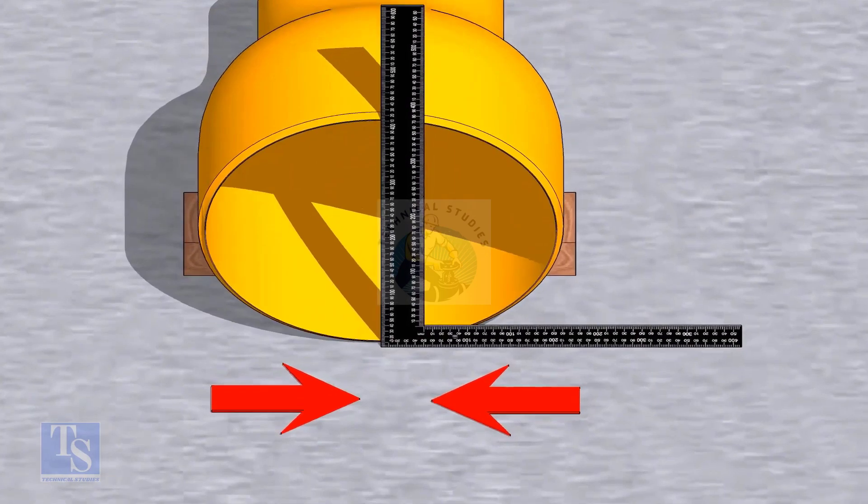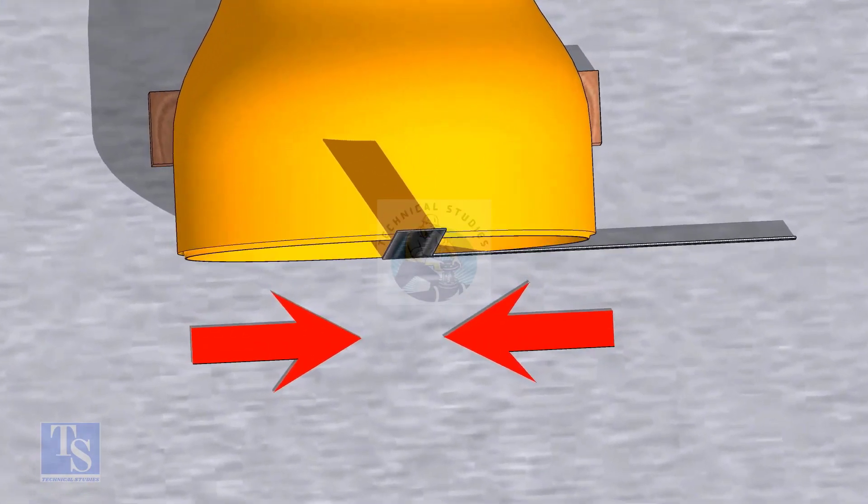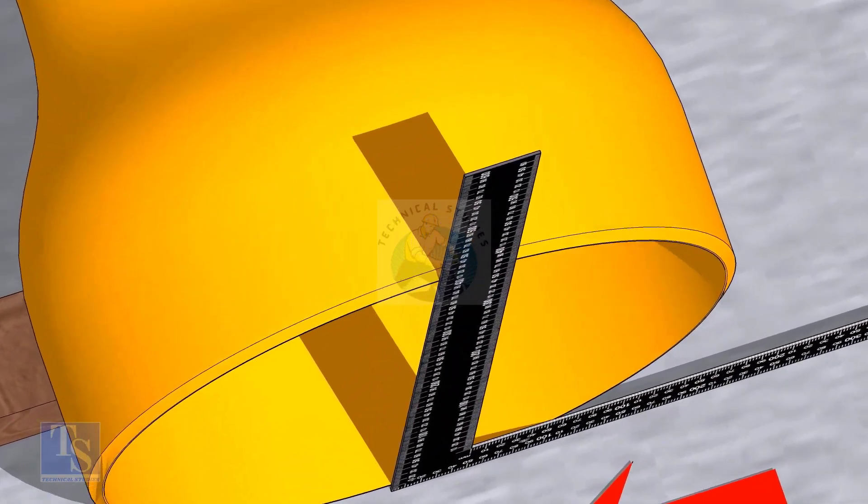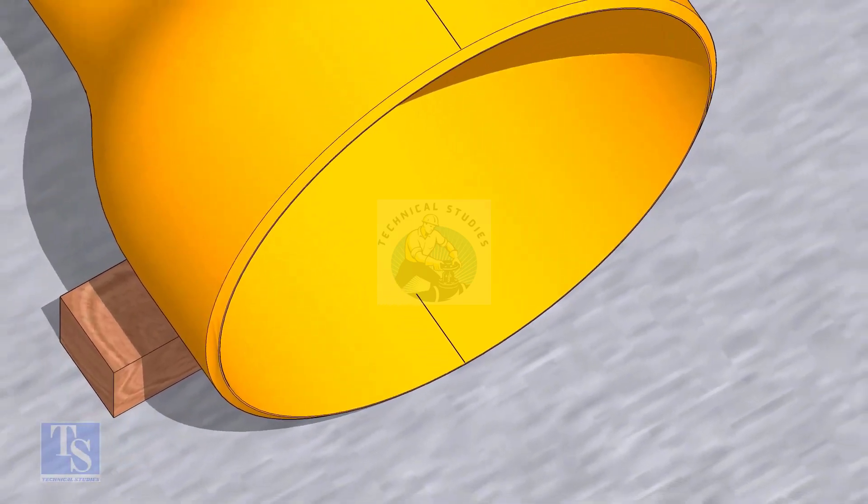Mark lines where the right angle touches the reducer. Transfer this marking to the outer face later.